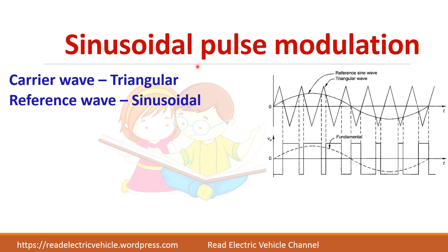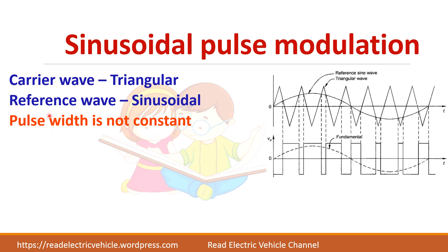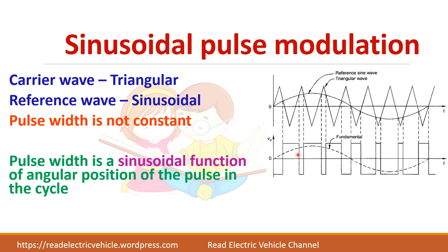In Sinusoidal Pulse Width Modulation, you have a carrier wave which is a triangular wave of very high frequency, and the reference wave is a sinusoidal signal whose frequency should equal the desired inverter output frequency. For example, if you need a 50 Hz AC output, you take the reference sine wave frequency as 50 Hz, so the inverter output will also be 50 Hz. You compare these two signals in a comparator, and whenever the sine wave is greater than the triangular wave you get a pulse. Note that in SPWM the pulse width is not uniform — it varies as a function of the sine wave.